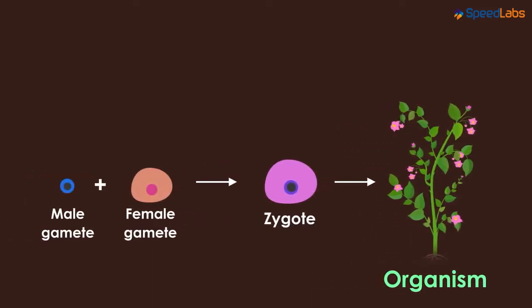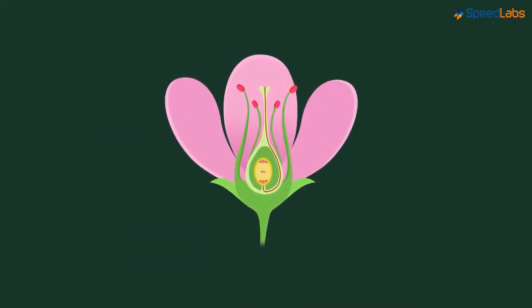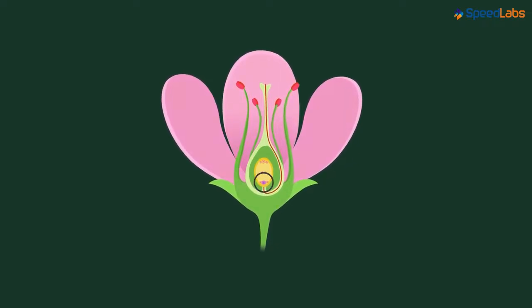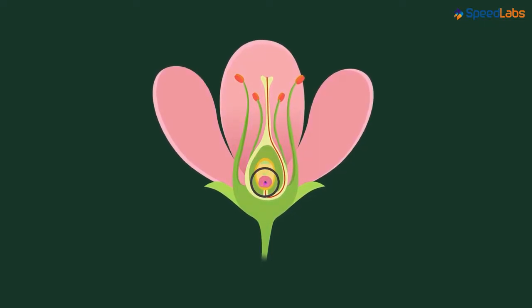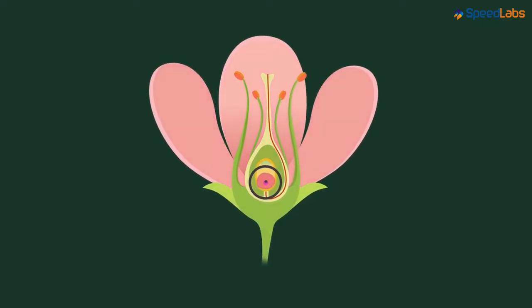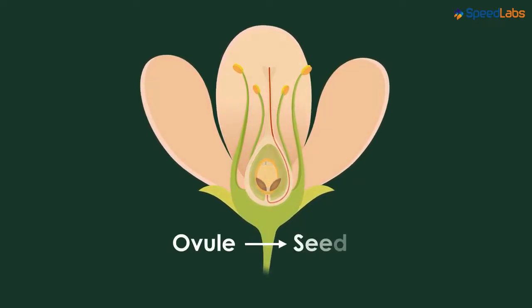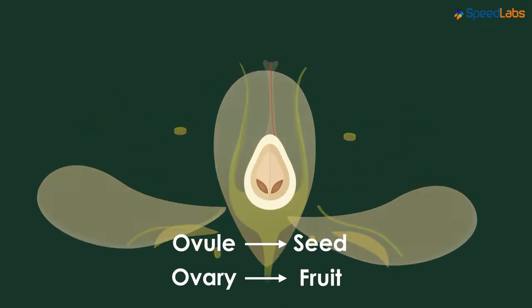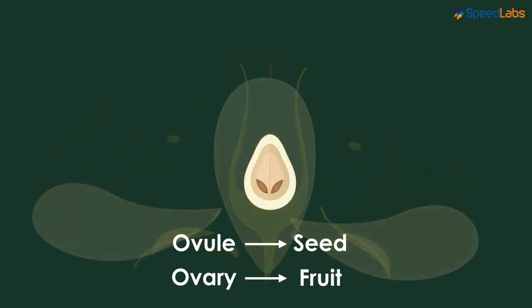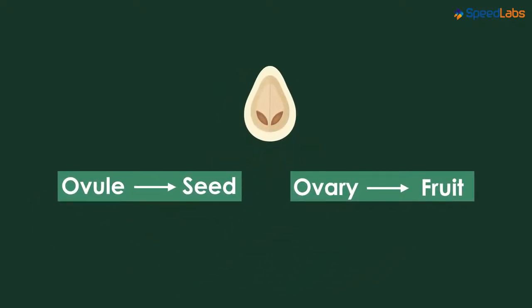In short, this is how the process of fertilization occurs in plants with flowers. After fertilization is completed, the ovule develops into a seed, the ovary develops into a fruit, and the other accessory parts like the petals and the sepals fall off. This means the identity of the flower completely changes when it turns into a fruit.